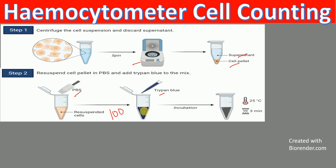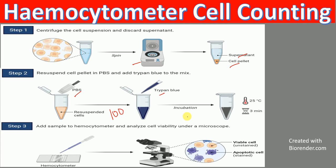In this mixture we have 100 microliters of cell suspension and 100 microliters of trypan blue. Different protocols use different amounts of trypan blue. You incubate for a while and then you load the sample to the hemocytometer. You load the sample to the hemocytometer and then analyze cell viability under a microscope. When you observe under a microscope, you will see some bright cells which are live cells and some purple cells which are dead cells stained with the trypan blue.